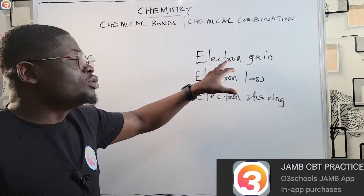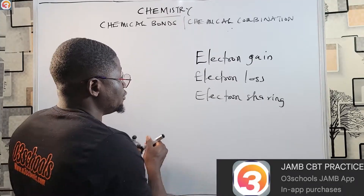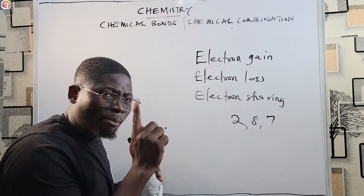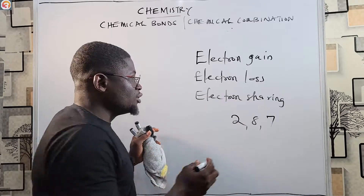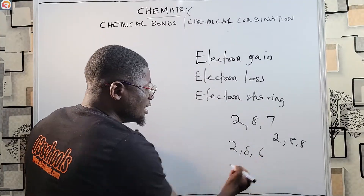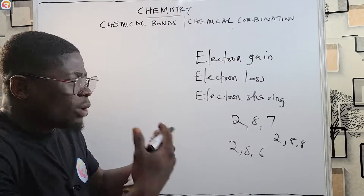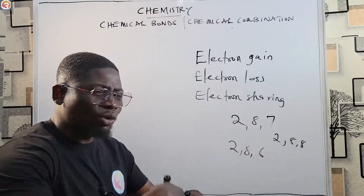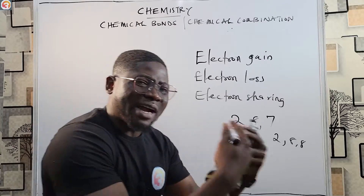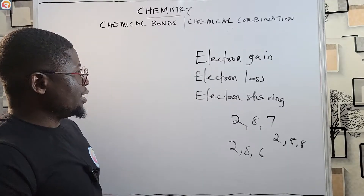For example, an element with electronic configuration 2,8,7 has seven electrons in the outermost shell and needs one more to be stable — so it can gain an electron to become 2,8,8. Another element with configuration 2,8,6 needs two electrons to become stable, so it bonds with another atom that has excess electrons or an affinity to give out electrons, and thereby obtains the stable octet structure.